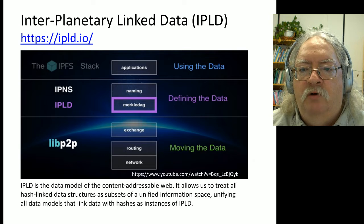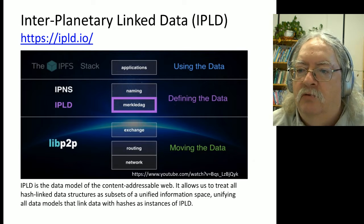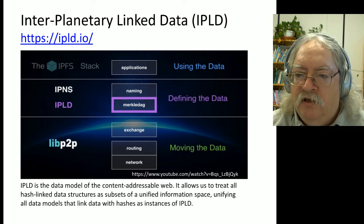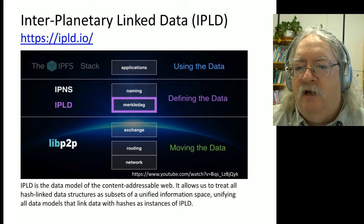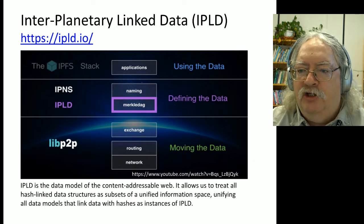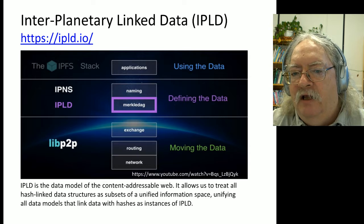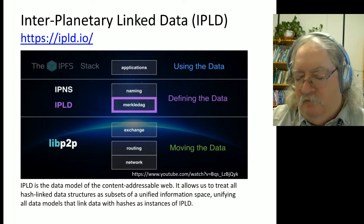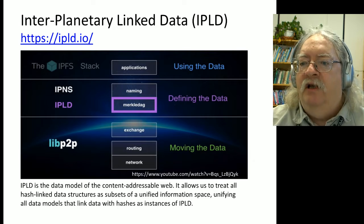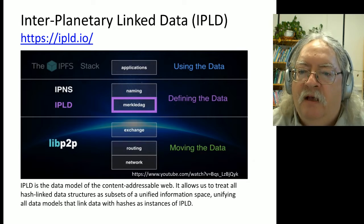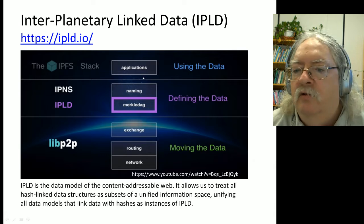IPNS associates a node with the actual content. For example, if I have an IPFS node, I identify myself to the rest of the IPFS network by means of my public key - or more accurately, a hash of my public key. Then IPNS associates that with a resource on IPFS, which would be basically my IPFS homepage. I have a website which I created earlier with Beaker Browser as my IPFS home site. And then ultimately, the applications at the top of the stack use all of that data.